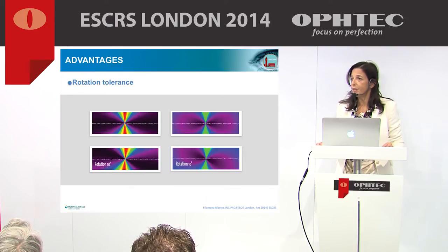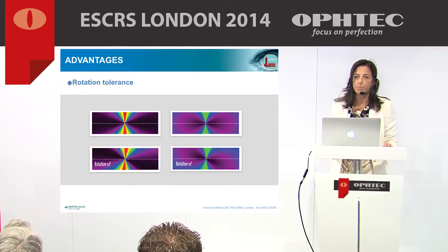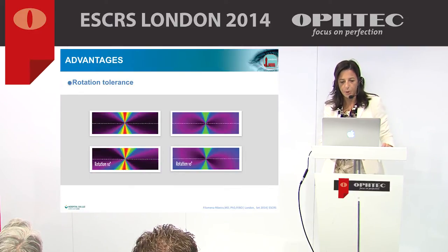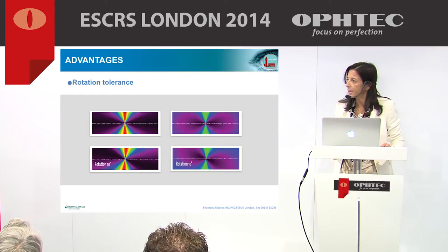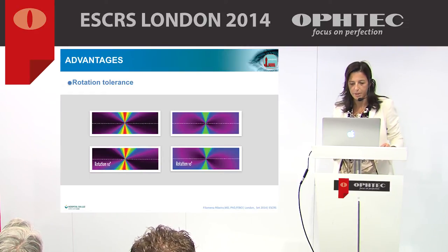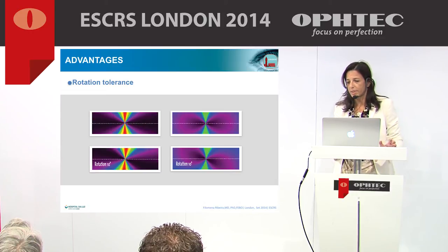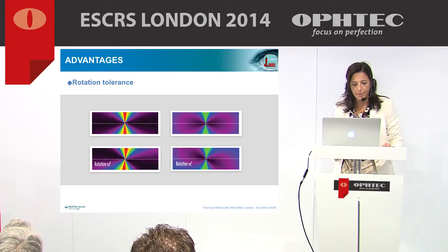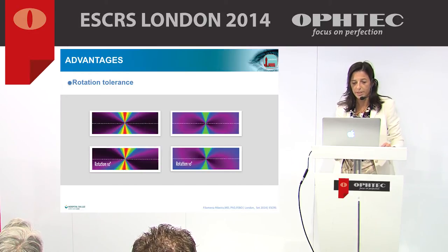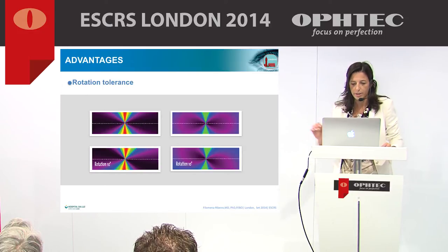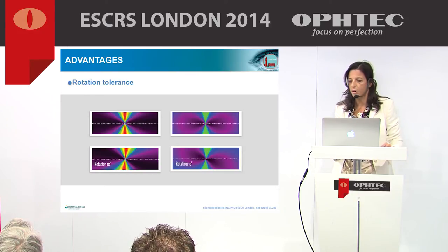A second feature is that the constant power per meridian means the meridian gets broader in the periphery when compared to standard toric IOLs. This makes the lens theoretically more forgiving for misalignment, as shown in the lower picture, which is an example of a 10-degree rotation.